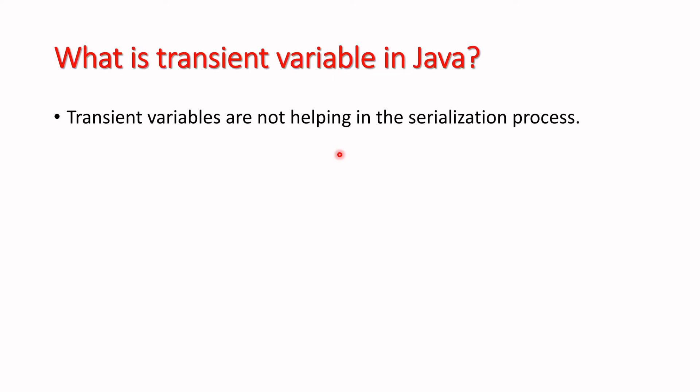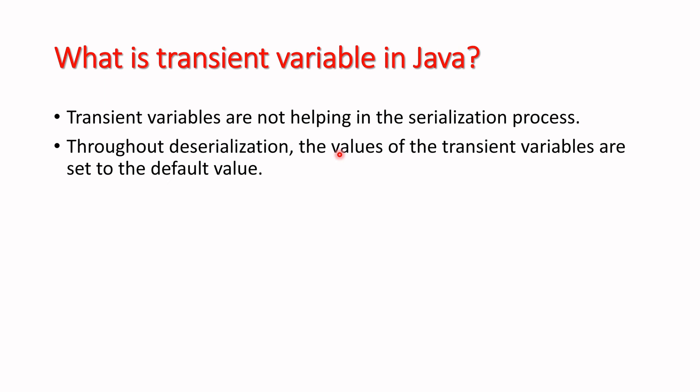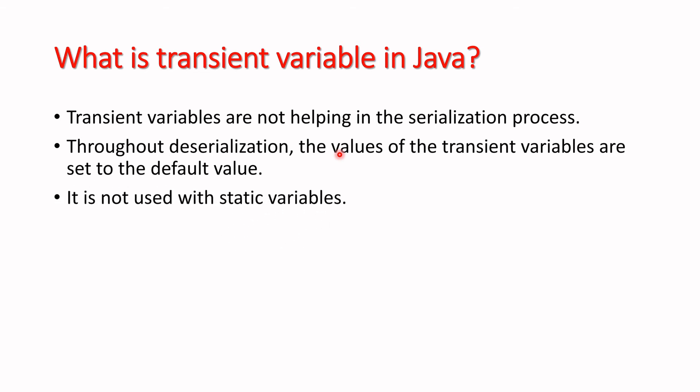Transient variables are not part of the serialization process. Serialization is used to serialize data into some other format, like byte format. So 'transient' is a keyword that helps to mark a variable so that it is not going to be part of the serialization process. During serialization, the value of transient variables is set to their default values, and transient is not used with static variables.